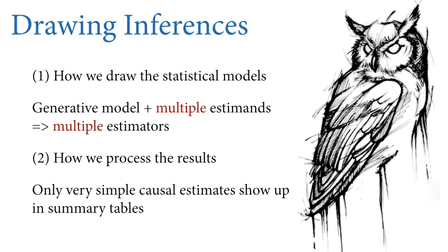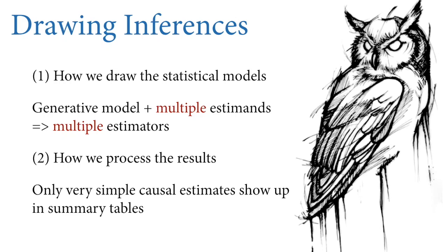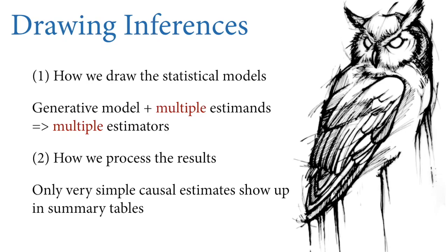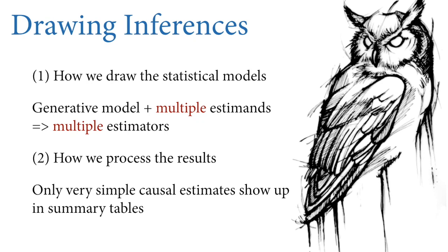The new element in this lecture is that for a single generative model, we will now have multiple estimates. This implies multiple estimators — multiple statistical models that are structurally different — and their structural differences are justified by the estimate in each case, reflected through the generative model. The second new thing is that quite often the estimate we want won't show up in a summary table, because it depends upon multiple unknowns in the posterior distribution or particular assumptions about the population. So in most cases we need to do some post-processing of the posterior distribution.